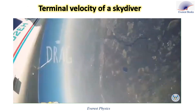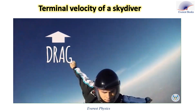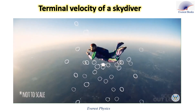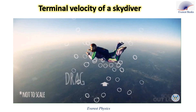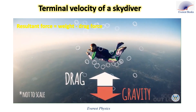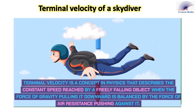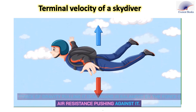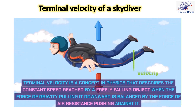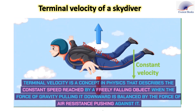The skydiver jumps from the airplane. The forces acting on the skydiver are his weight acting vertically downwards and the drag, or air resistance, acting vertically upwards. The resultant force is the weight minus the drag force, and the magnitude of the drag force increases with his speed. When the weight and drag force balance, the skydiver falls at a constant velocity called the terminal velocity.